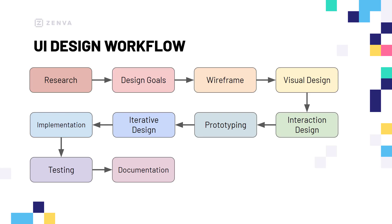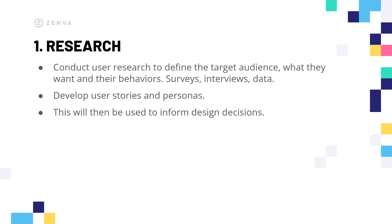This is our UI design workflow. You can see there are 10 steps, all the way from research to documentation, and we are going to go step by step to look at what each of these mean and how we can implement them. First of all we have research. Research is important because if you're going to develop an app or create a UI for a certain demographic, you probably want to know about the people that are going to be using this UI.